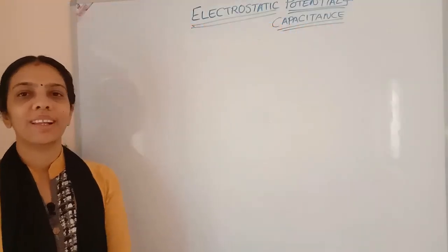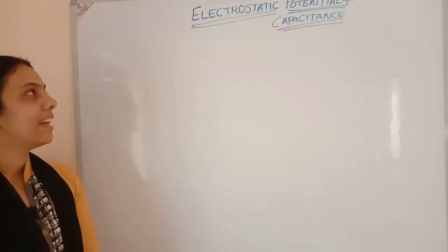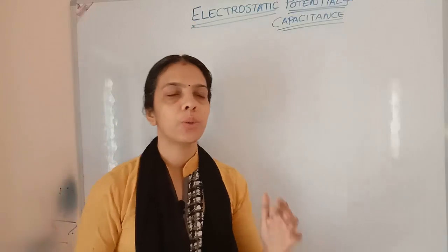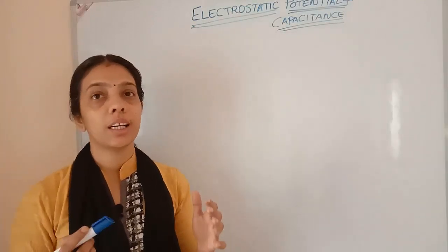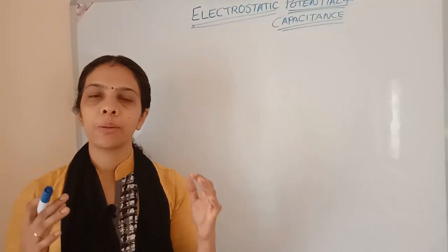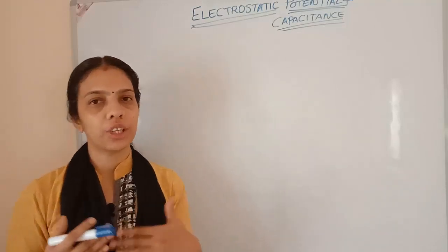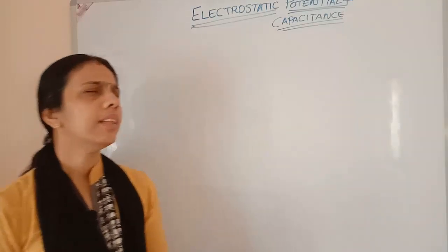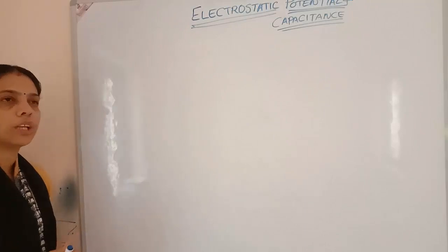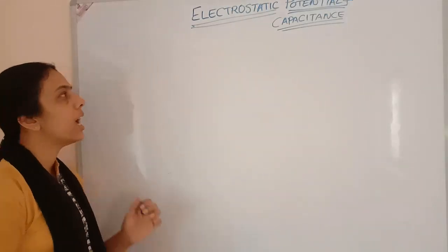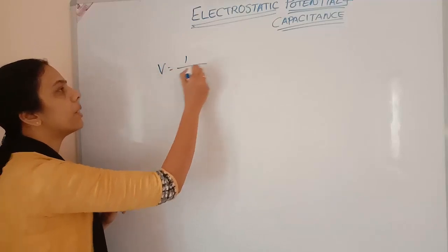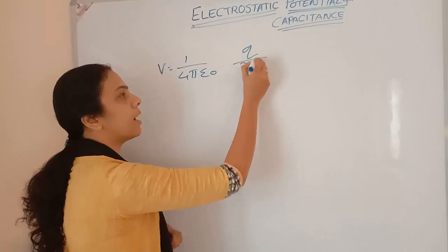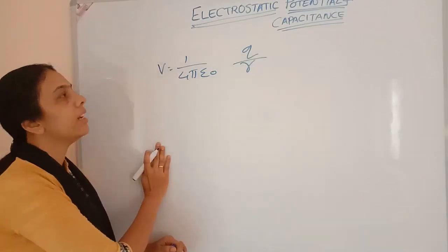Hello, welcome back to Learn Physics. In today's topic we are going to continue with electrostatic potential and charges. In the last video we learned about electrostatic potential, what is meant by electrostatic potential energy, potential difference, and the electrostatic potential of a point charge as V equals 1 by 4πε₀ multiplied by q divided by r.